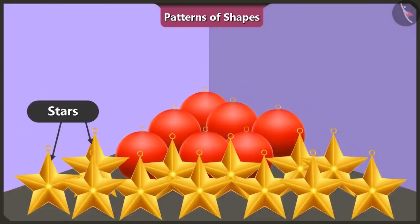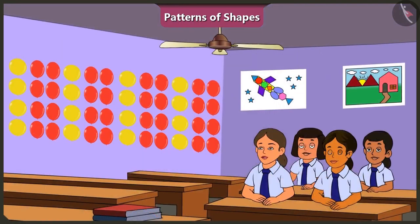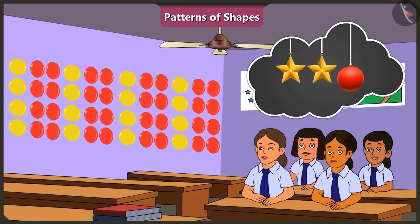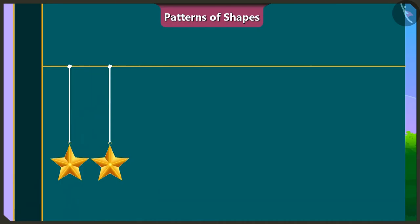Vinny, look over there. I can see some decoration materials in the shape of stars and spears. We can make a toran out of these two shapes to decorate the door. Yes, we can make a fantastic pattern with these. We can put a sphere after every two stars and create a beautiful toran by repeating this pattern. We will make a great toran. We can put two stars and a spear on a strong thread like this.